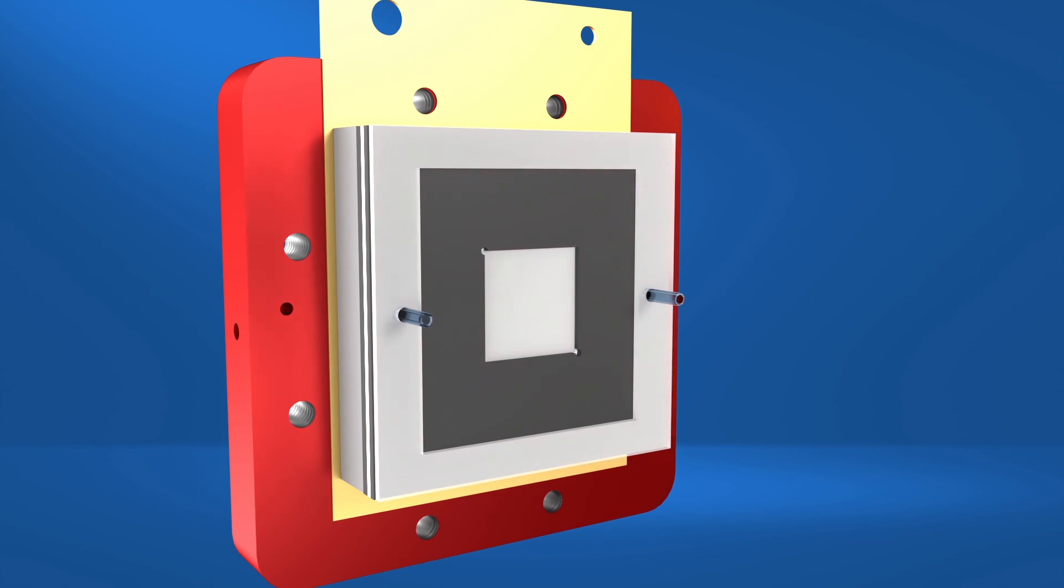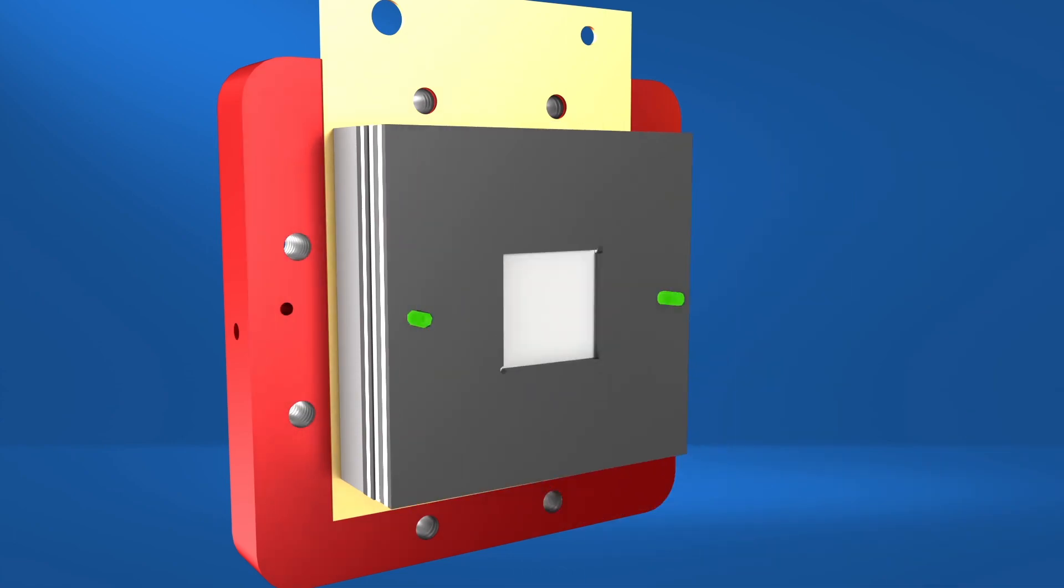Continue the same with the positive side of the cell by adding the main gasket, flow frame, electrode, and the flow field gasket.